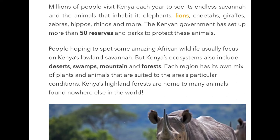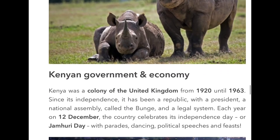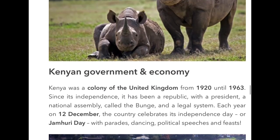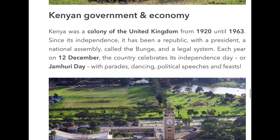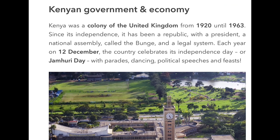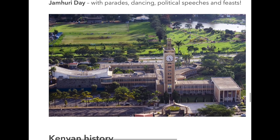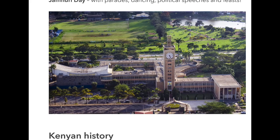Millions of people visit Kenya each year to see its endless savannah and the animals that inhabit it - elephants, lions, cheetahs, giraffes, zebras, hippos, rhinos, and more. The Kenyan government has set up more than 50 reserves and parks to protect these animals. There's a picture of two rhinos, which are very endangered because they're hunted for their horns. Kenya was a colony of the United Kingdom from 1920, and each year they celebrate their independence on the 12th of December.